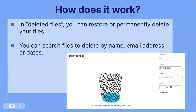In deleted files, you can restore or permanently delete your files. You can search files to delete by name, email address, or dates. This is what the deleted files section looks like. If you want to search for a file by email or name, this is for searching for that. If you're looking through specific folders, you can view a drop-down menu of the specific folders, or you can search by date — choosing a start date and end date.